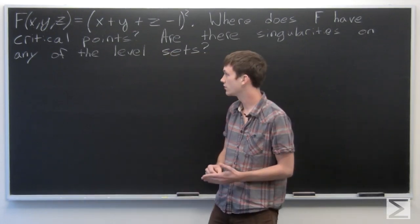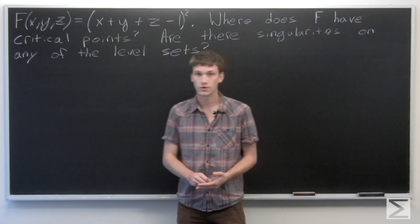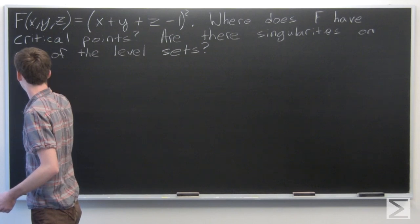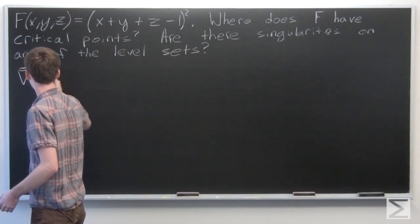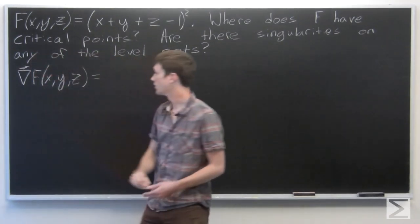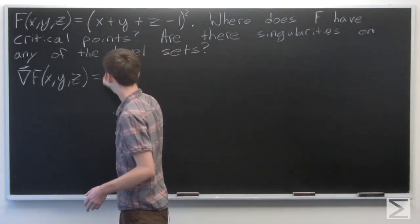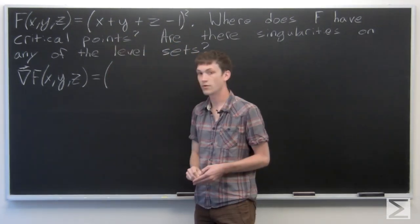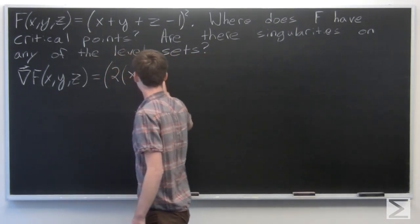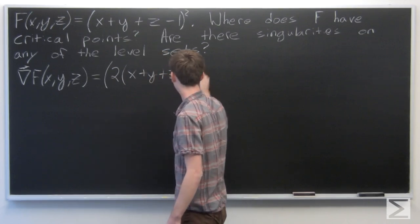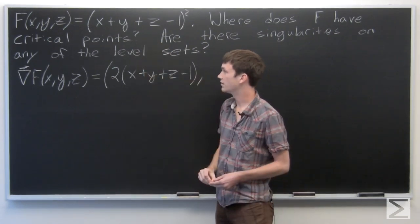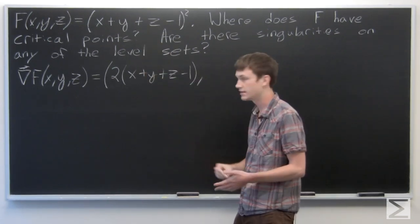First we want to find critical points. We know that the critical points of f are going to be when the gradient of f is equal to 0. So the gradient vector of f at (x, y, z) is going to be the derivative of f with respect to x, which is 2 times (x plus y plus z minus 1) times that quantity. The partial derivatives of f with respect to y and z are the same.